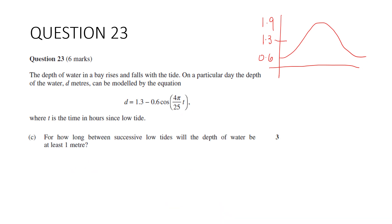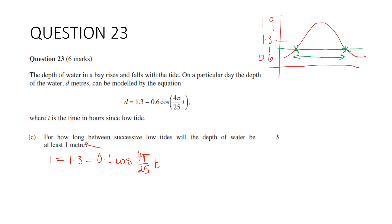Part C: for how long between successive low tides will the depth of water be at least 1 metre? We want the time between the two points where depth equals 1. This means solving a trigonometric equation. Setting depth equal to 1: rearranging gives 0.6·cos(4π/25 · t) = 1.3 − 1 = 0.3.